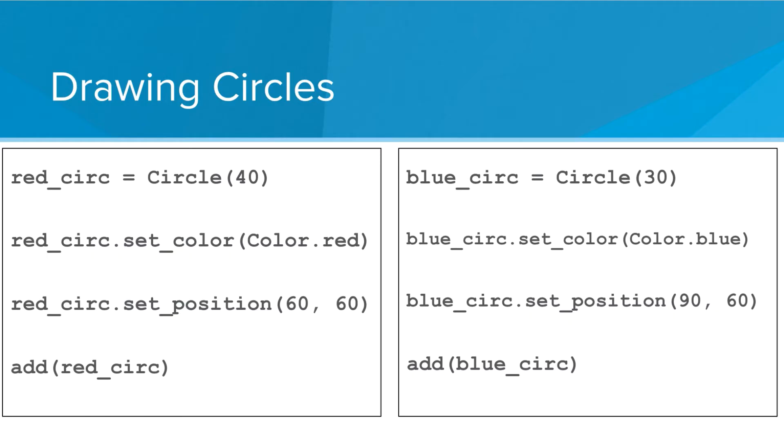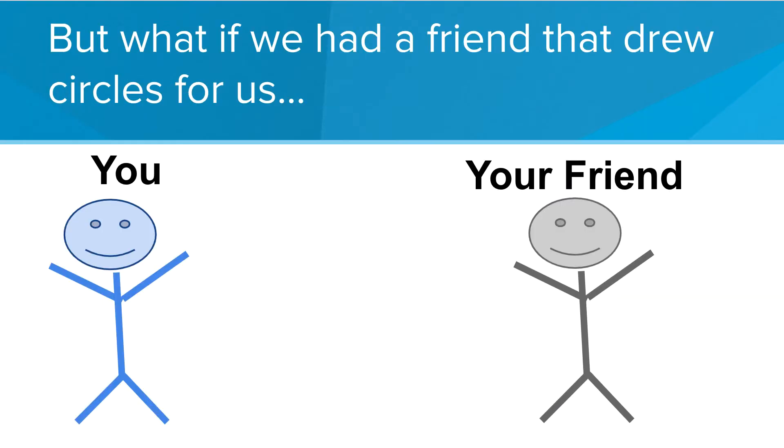The radius or color or position might be different, but the overall structure is the same. So what if we want to ask our friend to do this for us?